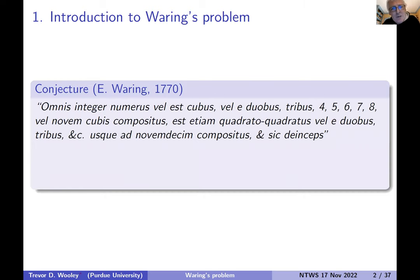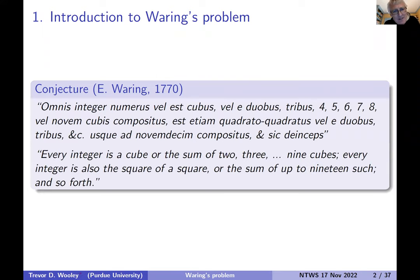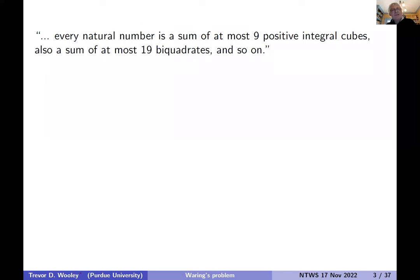So the obligatory background. The conjecture of Waring goes back to 1770. This is Edward Waring. Waring made a conjecture that every natural number is the sum of at most nine positive integral cubes, also a sum of at most 19 biquadrates and so on.